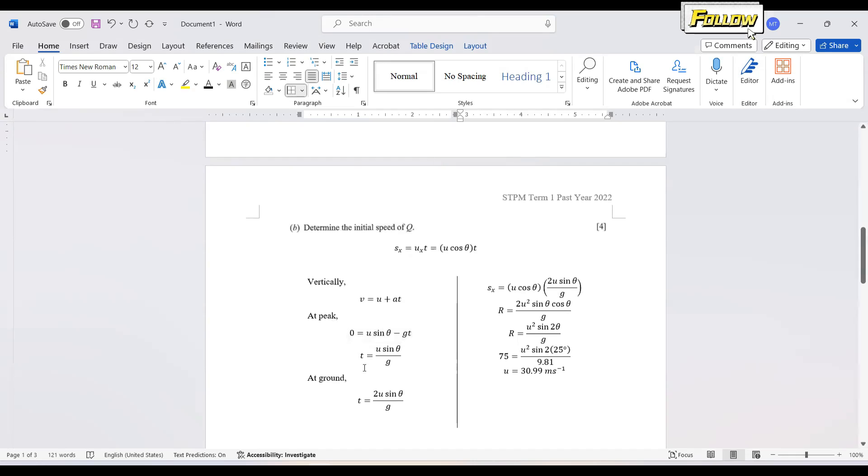And when the object landed on the ground, so we know that the time should be double, because it is a quadratic graph. So there's a symmetry. So the time is double, it is equal to 2u sin theta over g. So you can revise back about the derivations because it's something familiar for you.